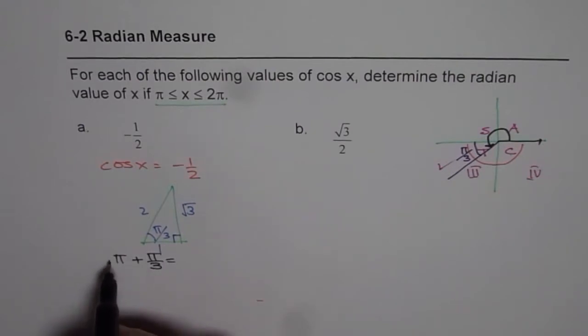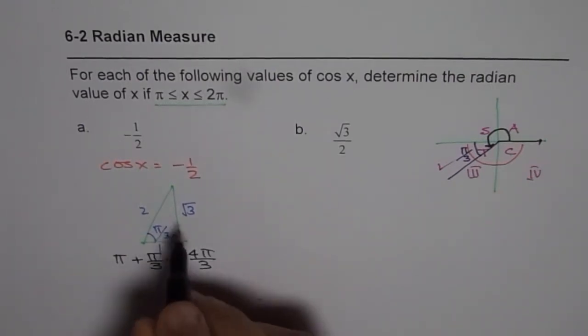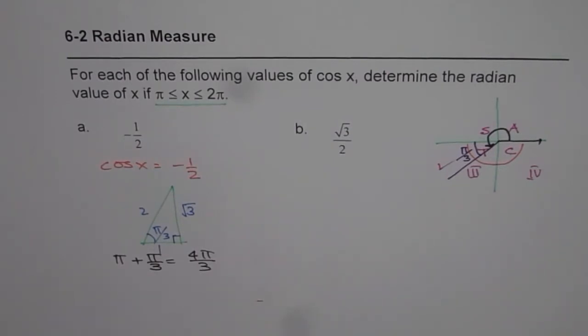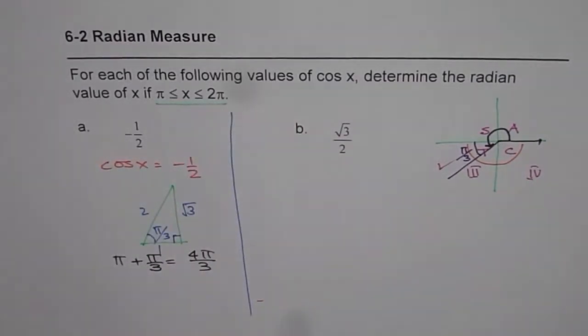Which is 3 plus 1, 4π/3. So in this case, the answer is 4π/3. Now following these steps, I think you should be in a position to answer the next question.